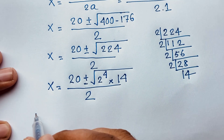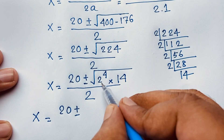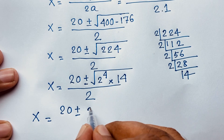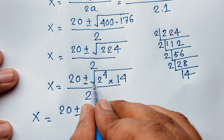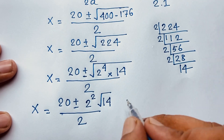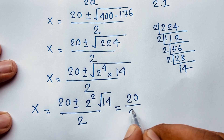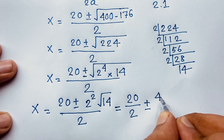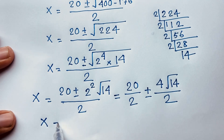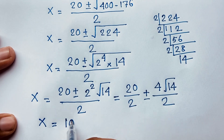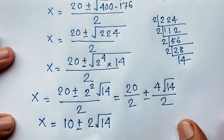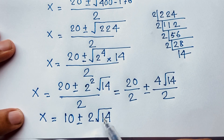Taking the square root of 2 to the power 4, half the exponent gives 2 squared, which is 4. So x equals 20 plus or minus 4 square root 14, all over 2. Separating the fraction: 20 over 2 is 10, and 4 over 2 is 2. Therefore x is equal to 10 plus or minus 2 square root 14.